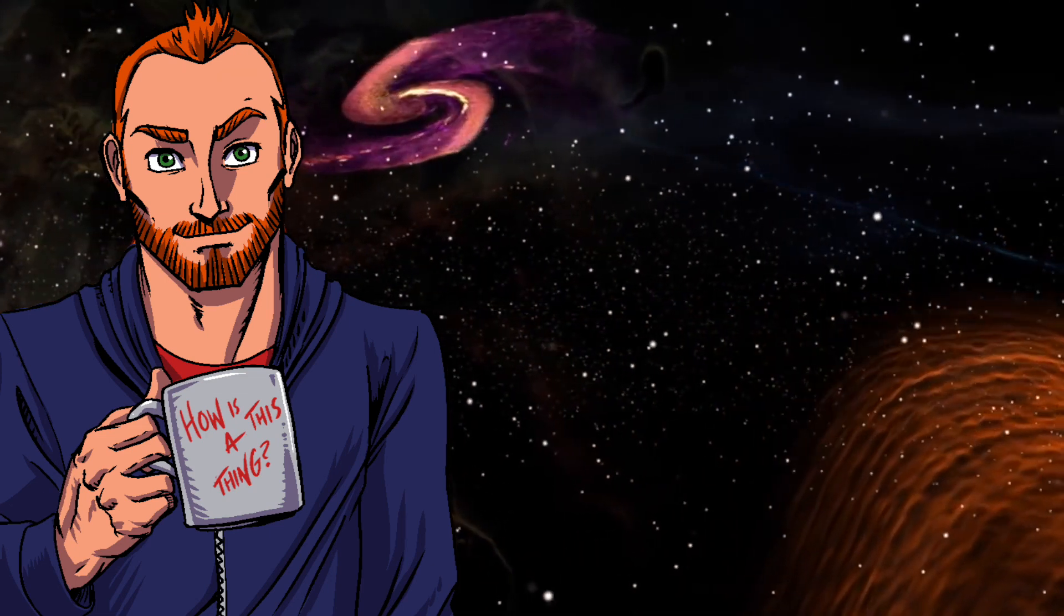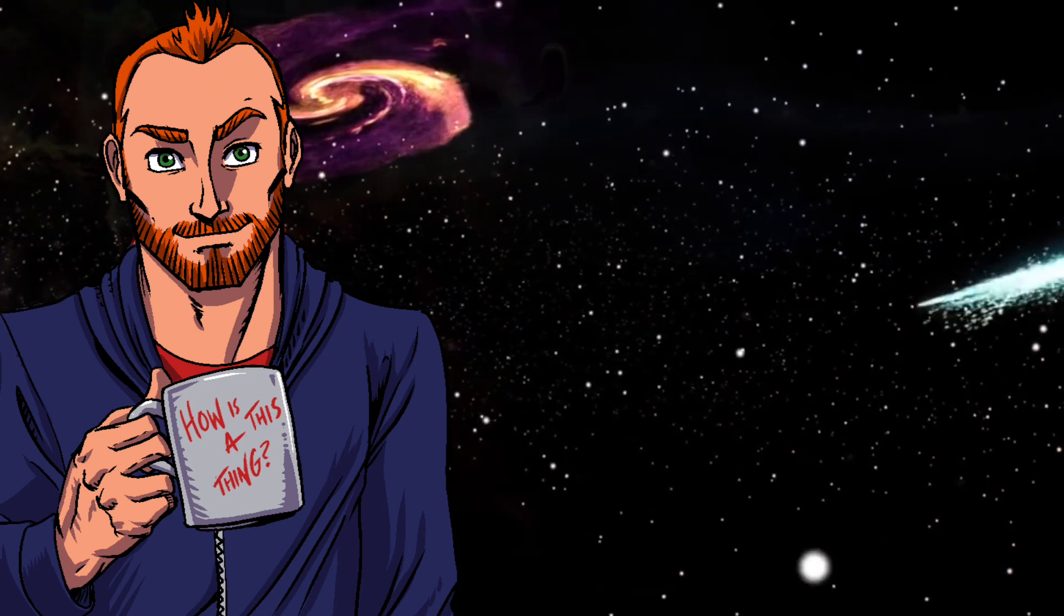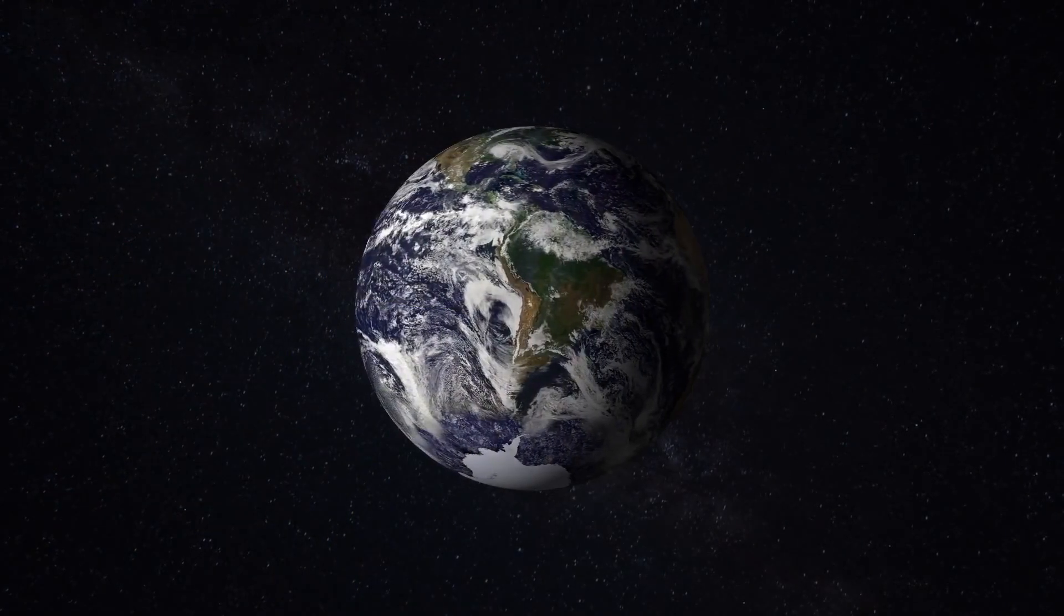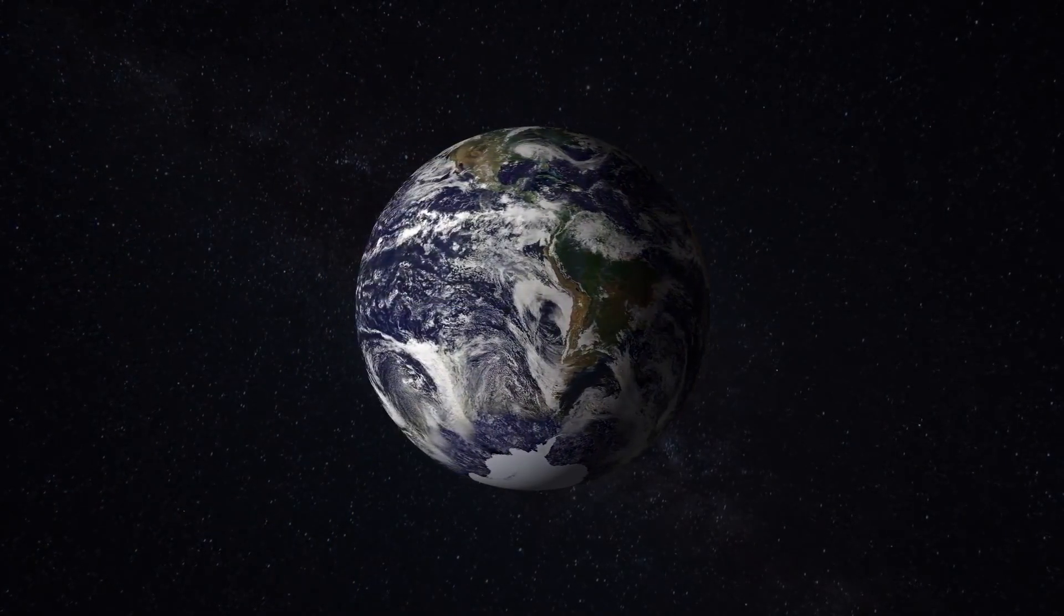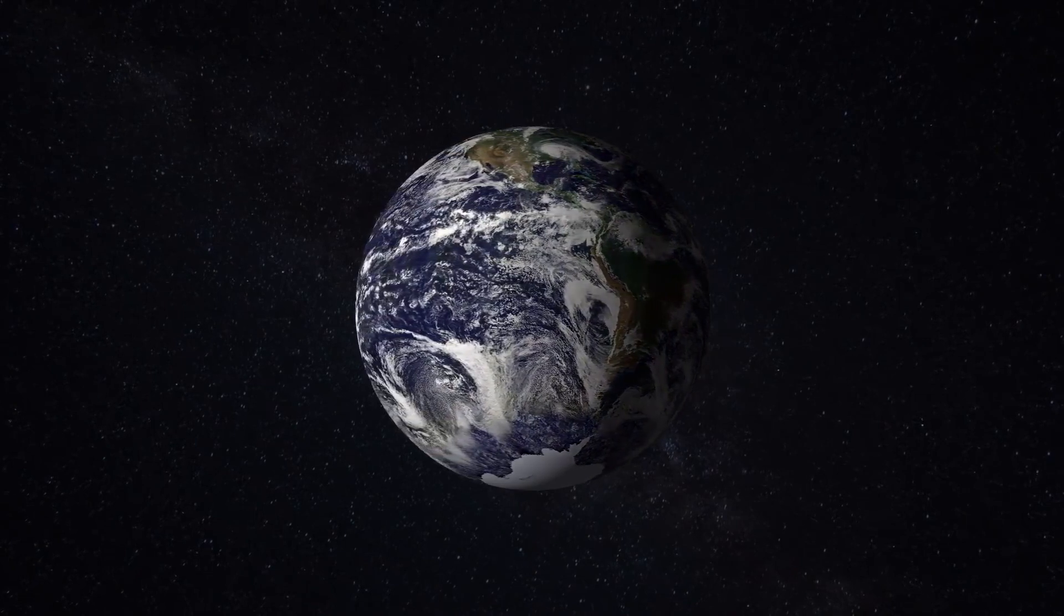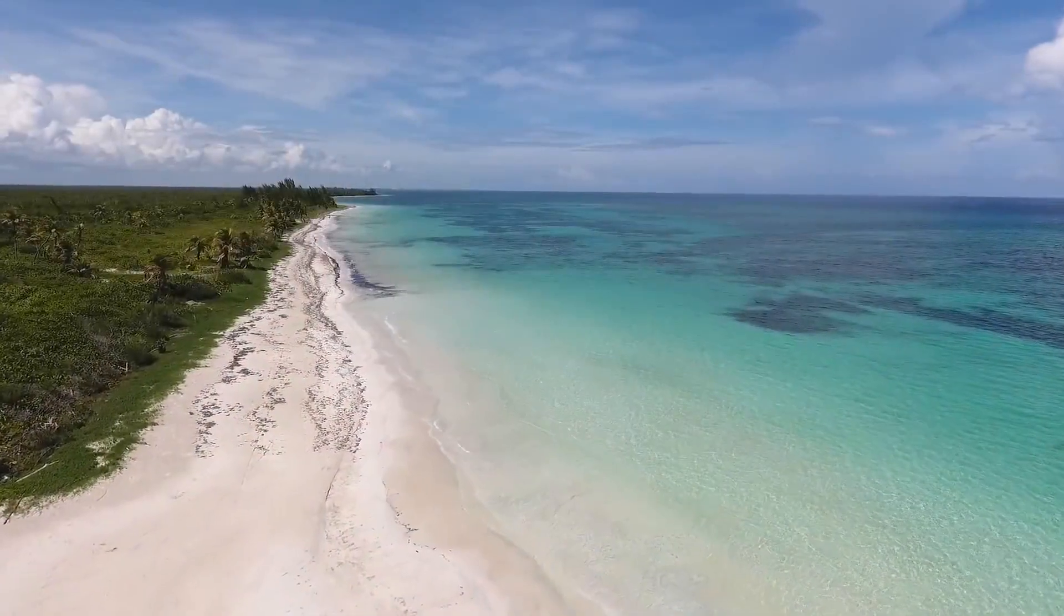It's estimated that the Milky Way galaxy alone has between 200 billion to 400 billion stars and perhaps 100 billion planets. If even just 1% of those planets is Earth-like, which is to say they're capable of supporting an atmosphere that allows liquid water to exist on its surface,